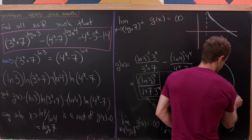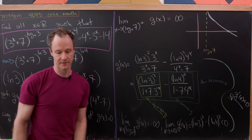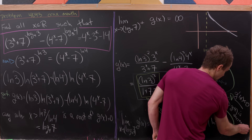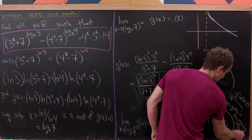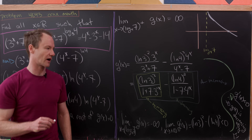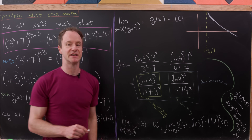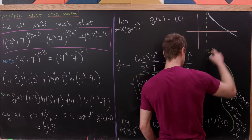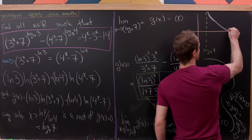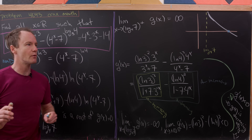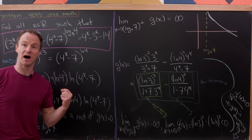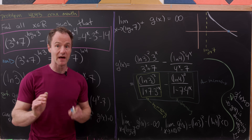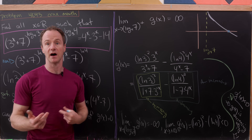Since g'(x) is always negative, g(x) is strictly decreasing. A strictly decreasing function is one-to-one, just as we argued with f(x). So g(x) really does have the picture we sketched — a vertical asymptote on the left and then strictly decreasing — giving a unique root that we need to find. The key takeaway is: if we can find a solution, it is the only solution.